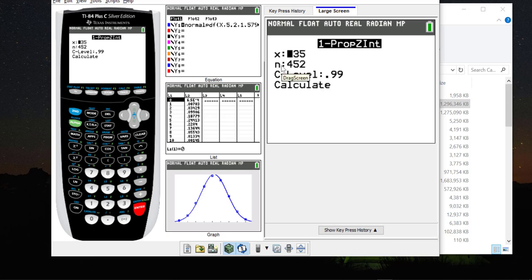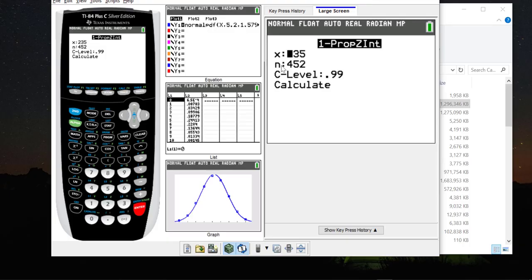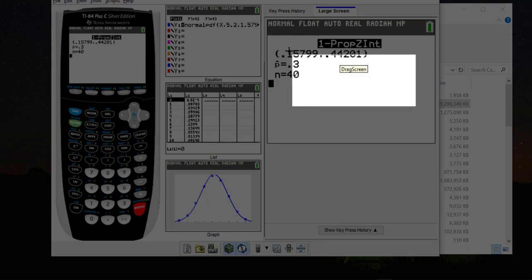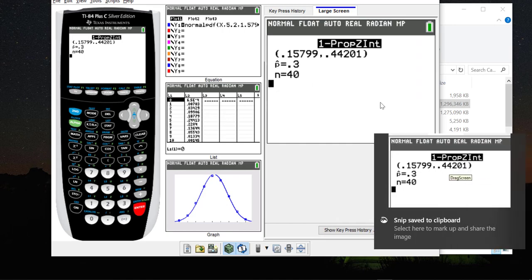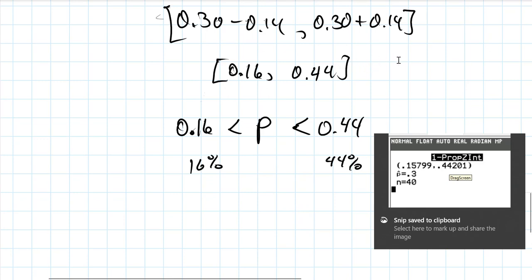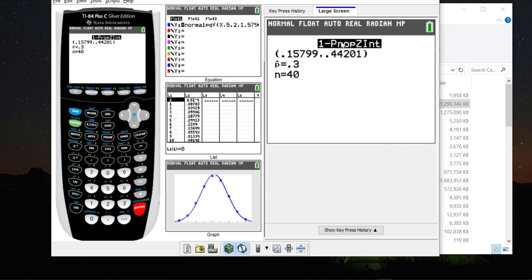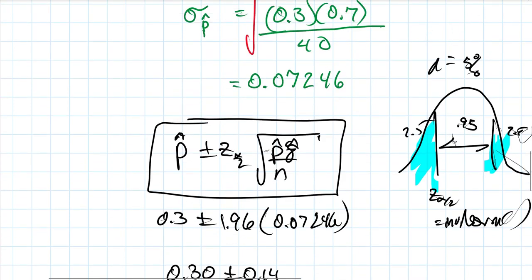So what was it? 12 out of 40. So it's 12 that failed out of the 40, and we want a 0.95. And we get the 0.16 up to 0.44. And if we go back, we'll see that that is the same: 0.16 to 0.44. So those values are consistent. You can also use your calculator to do this work for you as well.